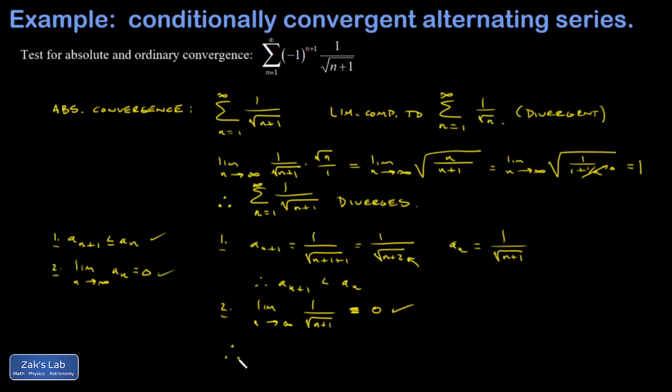And we can say, therefore, this alternating series converges in the ordinary sense, even though it diverged when I took the absolute values of the terms. And the way we describe that is that it's conditionally convergent.